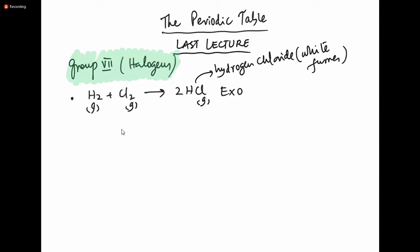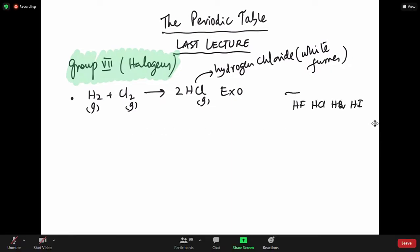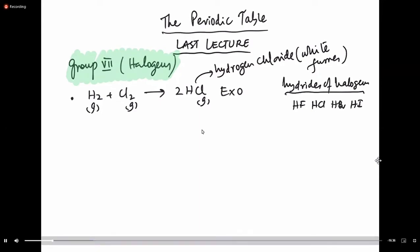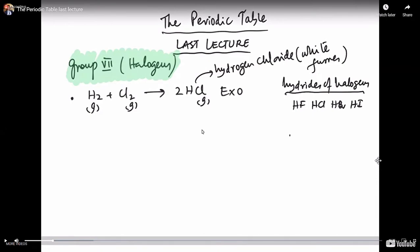All elements of group seven — all halogens — react with hydrogen and give you the respective hydrogen halide: HCl, HBr, HI, HF. These are called hydrides of halogens.